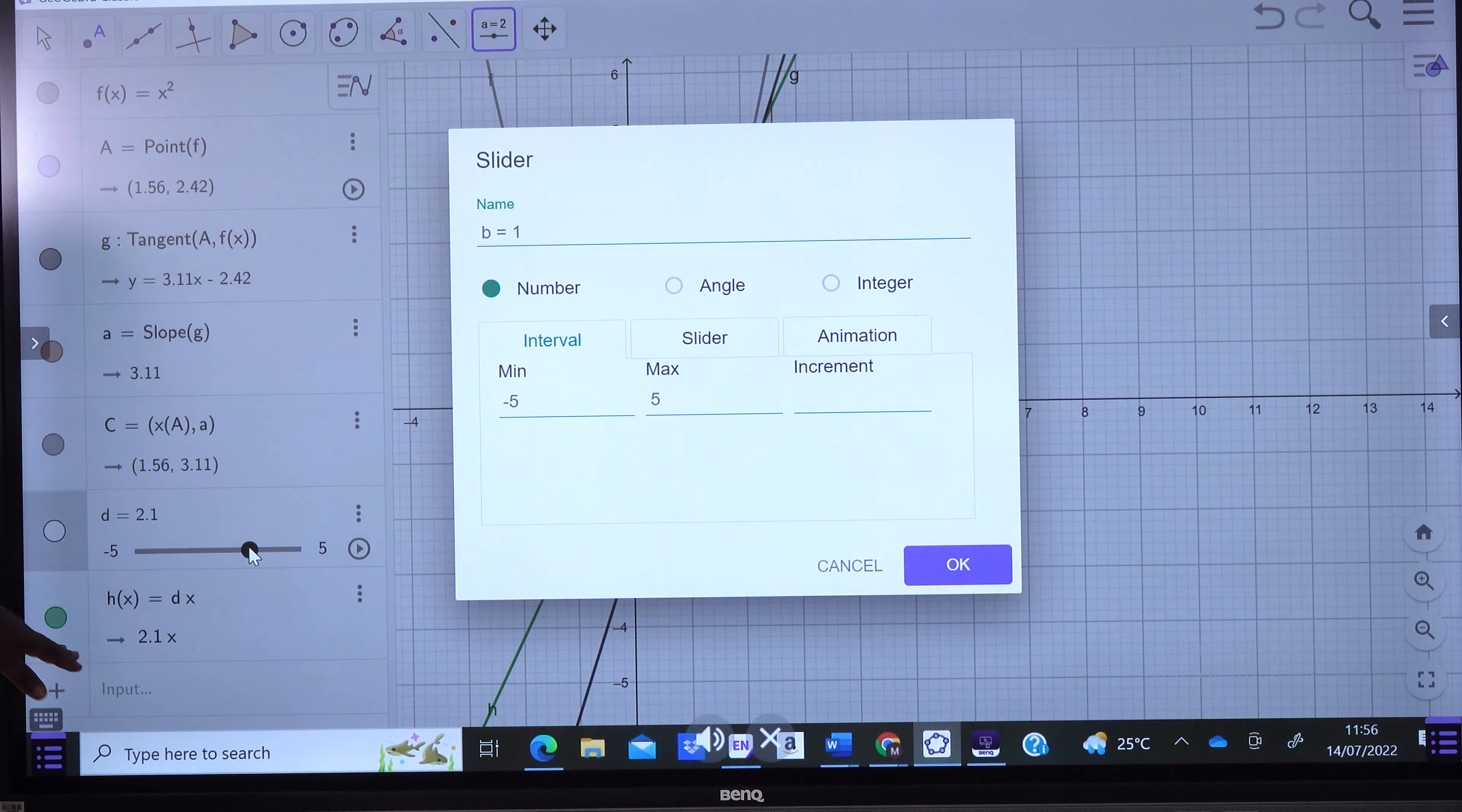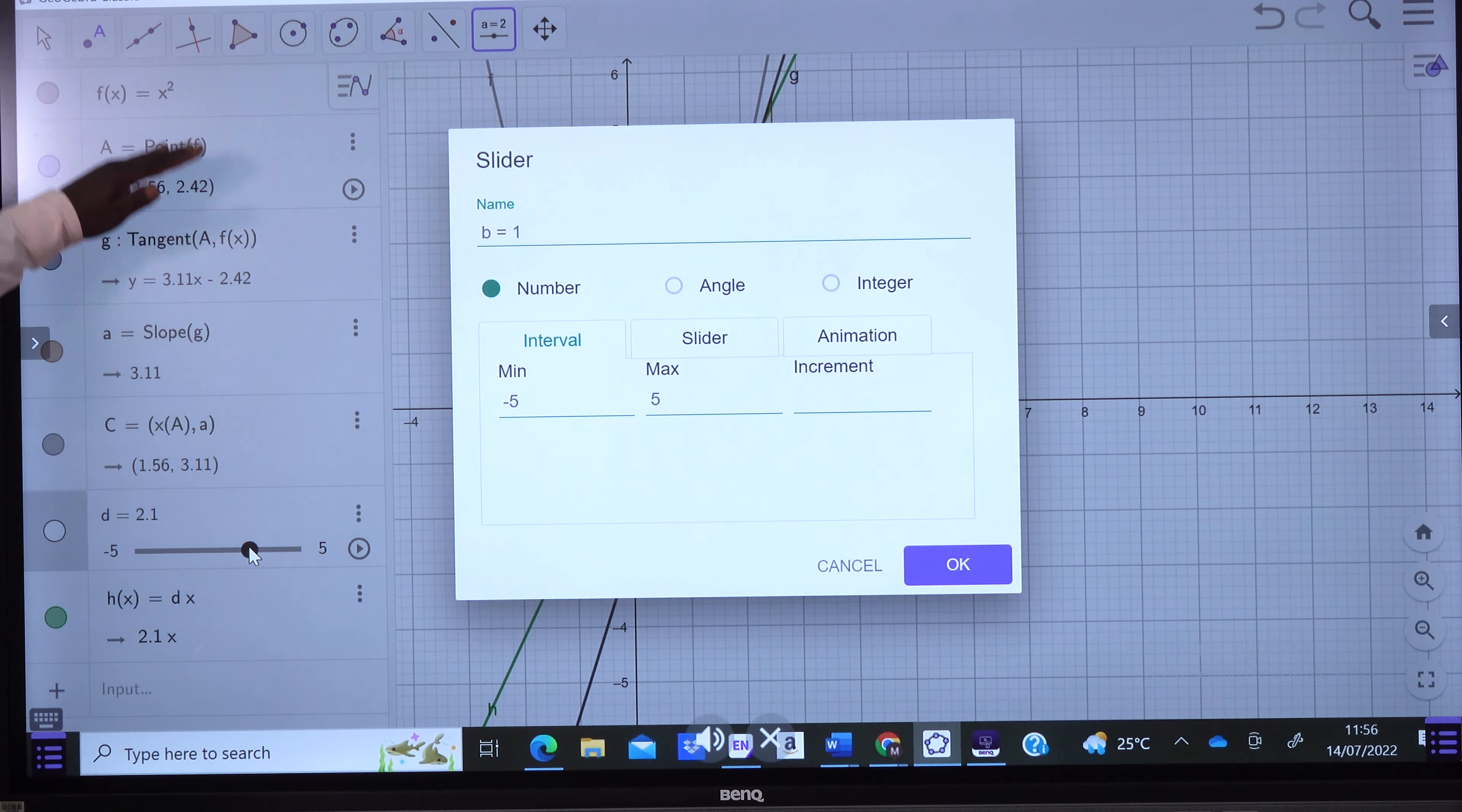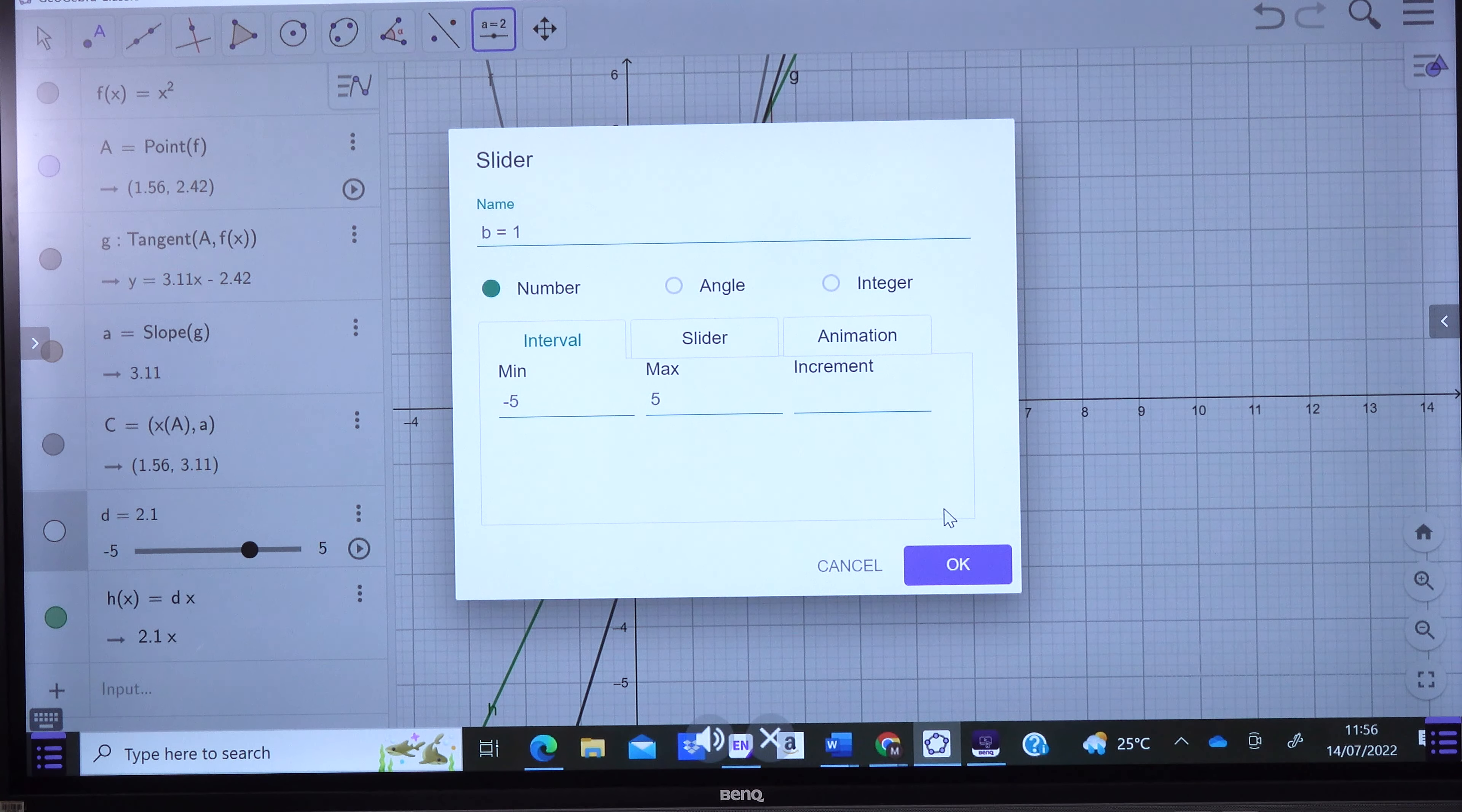our d is going to be 2x, which means that the inverse function of our function f of x equals x squared is 2.1. Thank you very much for being attentive.